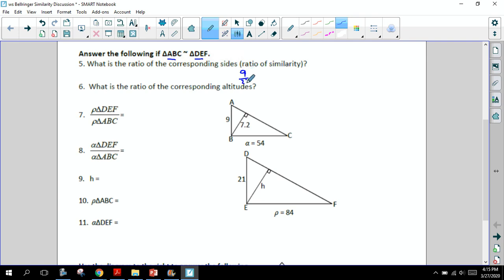Now, you always want to reduce. So when I do that, 9 and 21 reduce down to 3 over 7. So the ratio of the sides is 3 over 7. Then the next question, 6, is what's the ratio of the corresponding altitudes? Well, we had a theorem that talked about that the ratio of the corresponding sides in similar triangles is equal to the ratio of the corresponding altitude. So this is just simply the same answer of 3 over 7.